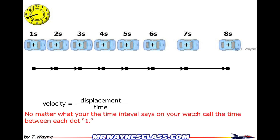No matter what the time interval says on your watch, whatever that time is between each dot, we're just going to call it 1. So if it's 5 seconds, we're going to call it 1 tick of time. If it's 30 seconds, we'll call that 1 tick of time. If it's an hour, we'll call it 1 tick of time. If it's 23 and a half hours, we'll call it 1 tick of time. So these are equal time intervals, 1 tick of time.